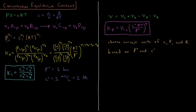We can take this ideal gas equation and raise it to the power νi on both sides. This gives us the expression that the pressure of an individual component in the reaction to the power of its stoichiometric coefficient equals its concentration to the same power times the gas constant times temperature to the same power.